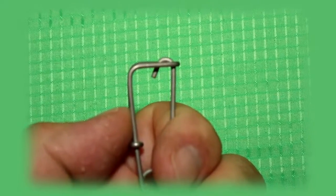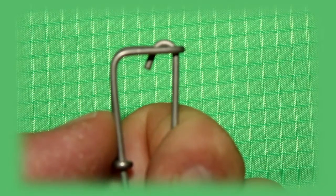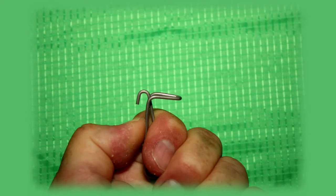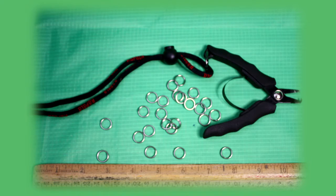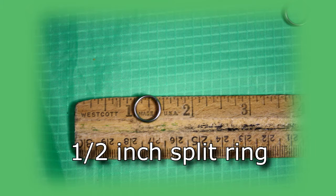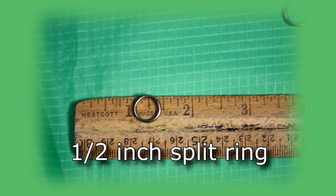The trot line clip has several positive attributes. They are easy to handle and use, durable and of course, have a place for the kite tail. Also featured in this show are split rings along with an indispensable tool, the split ring pliers.